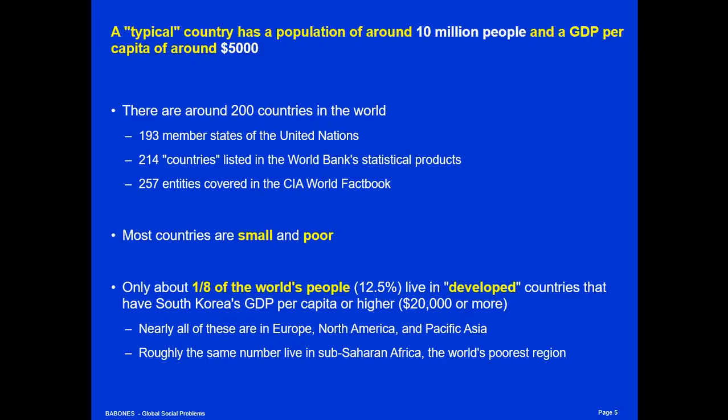So when you try to get your head around what a typical country is like, think something the size of Jordan, not something the size of Australia or Canada. Moreover, only about one-eighth of the world's people live in developed countries — meaning countries with a GDP per capita of $20,000 per person or more, roughly South Korea's level or higher. Nearly all of these countries are in Europe, North America, and the Pacific Rim of East Asia. Roughly the same number of people, and roughly the same number of countries, are in sub-Saharan Africa as in the entire developed world.